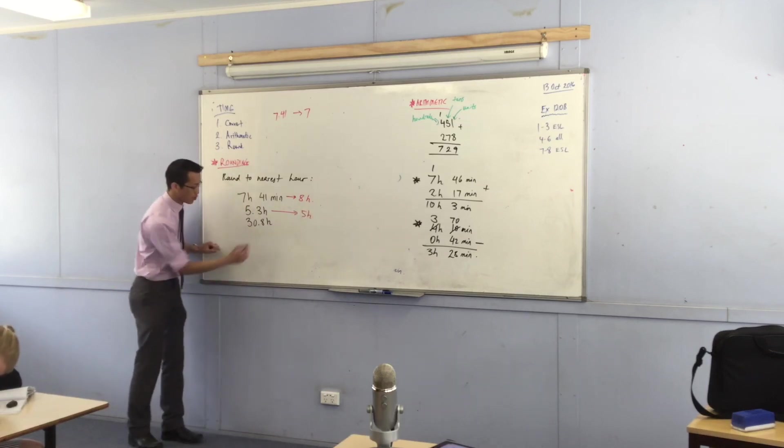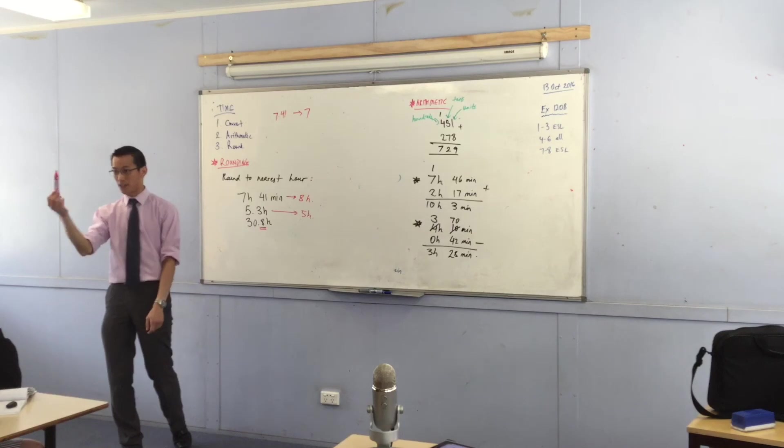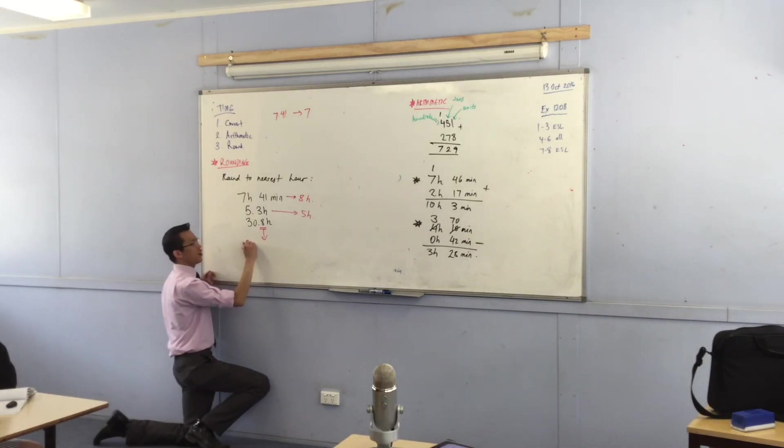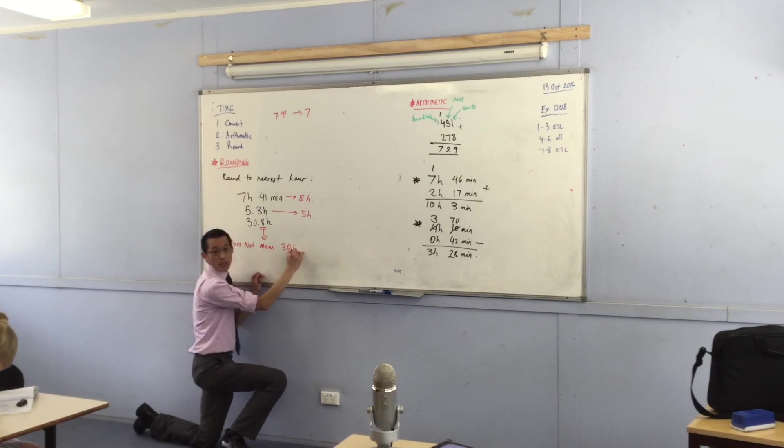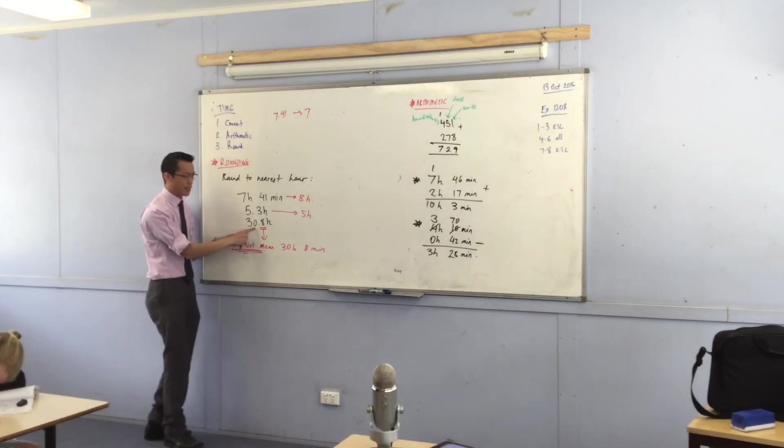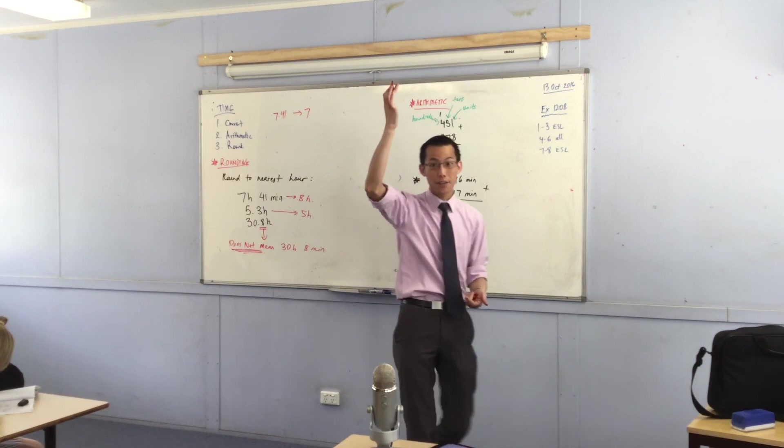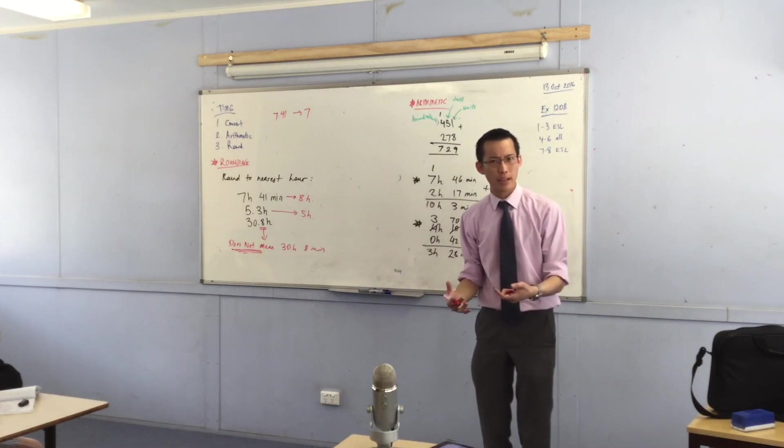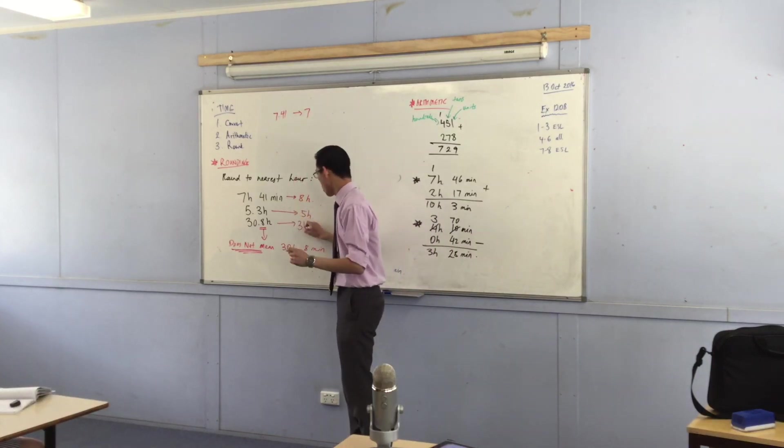And the last one I just want to caution you of is this one because this is a very common error. So please write underneath this just like I have in another color. This does not mean 30 hours and 8 minutes. That's not what it means. It means 30 hours and 0.8 of an hour. Now, 0.8 of an hour is obviously more than half of an hour. Do you agree with that? Yes. Because half an hour is 0.5 of an hour. So is this going to round up or down? Up. Genius. 31 hours.